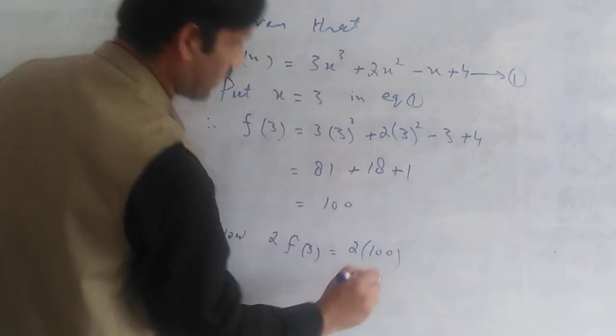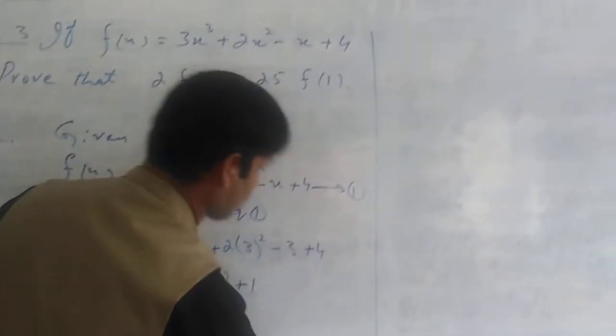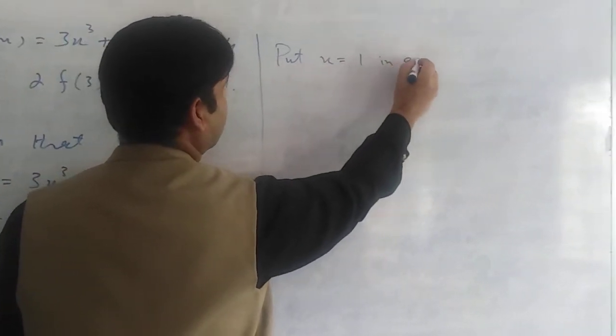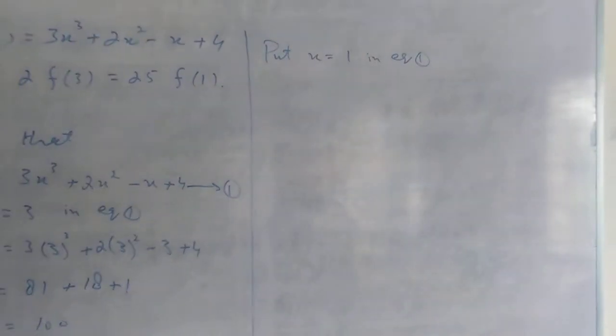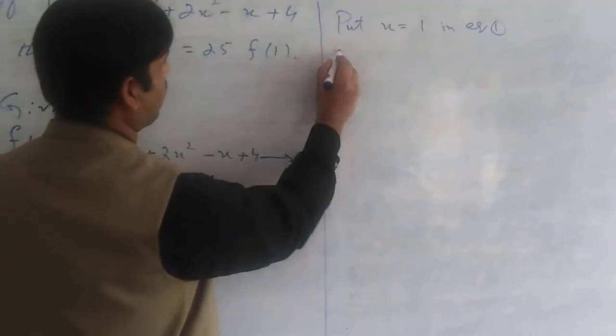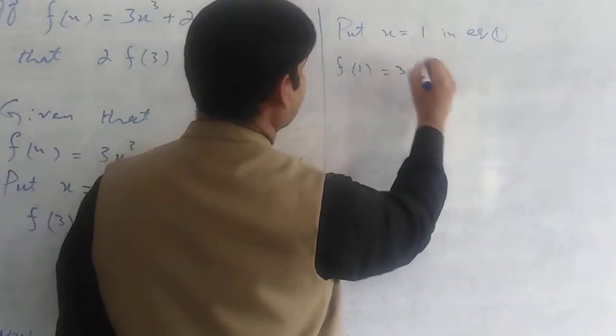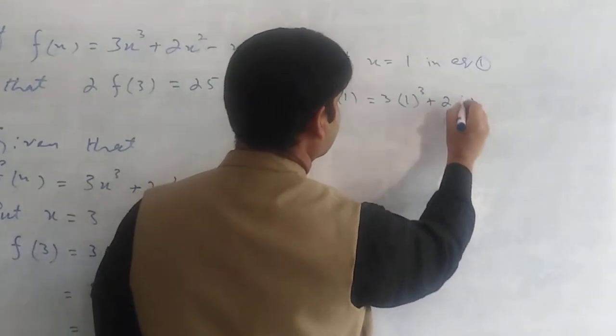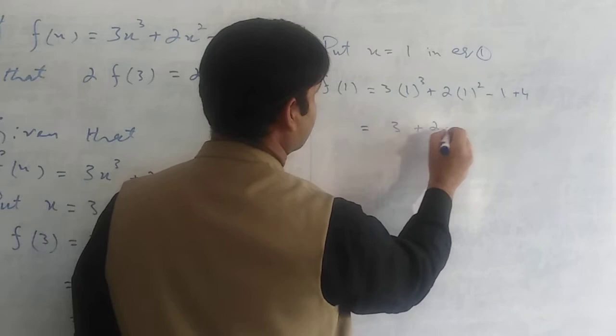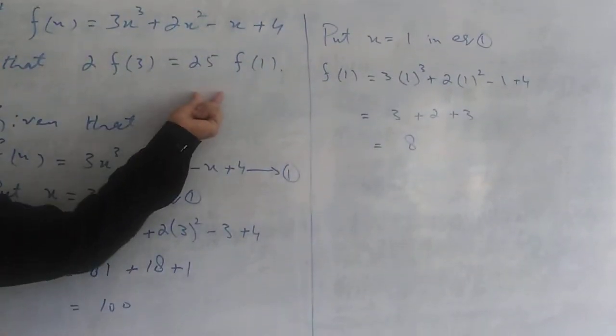Now, the other side is f of 1. We will multiply x equals 1 in equation number 1. In the first equation, x equals 1 will multiply. Then we will simplify it.